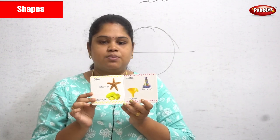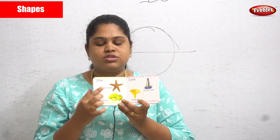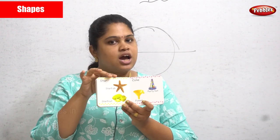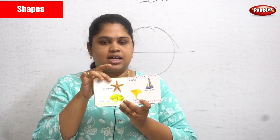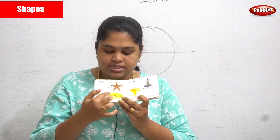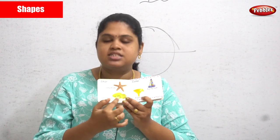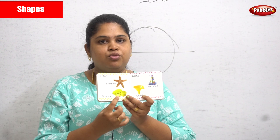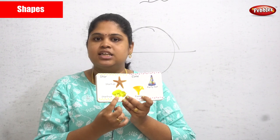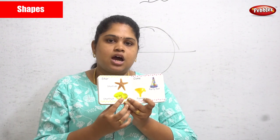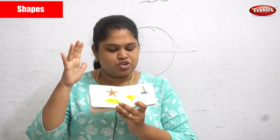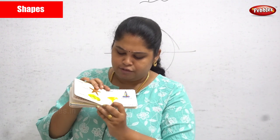Next is the star shape. You all know how a star looks. Starfish look like a star shape. Star fruit is also in a star shape — it's a bit sour in taste.